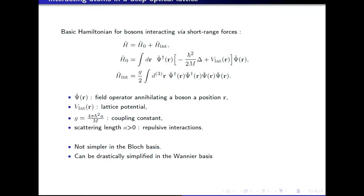Now I want to add the fact that these atoms trapped in this lattice can interact. As we saw last time, this can be described by an effective interaction Hamiltonian with a strength g, related to the scattering length, which is very short-range, so we can approximate it by a delta function.